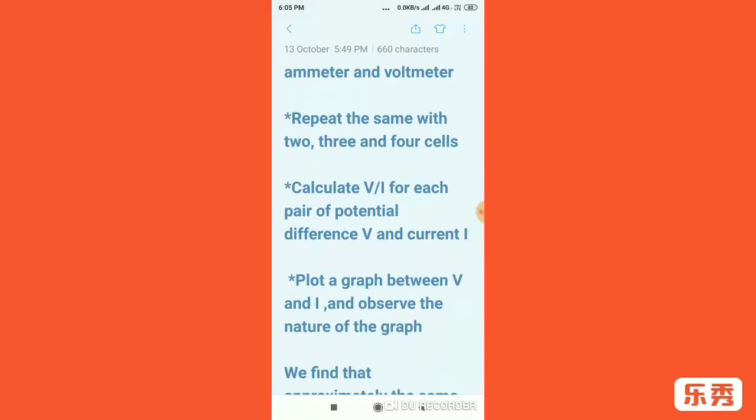Now calculate V by I for each pair of potential difference V and current I. For each pair, the first cell you got a potential difference V and I. For the two cells you got something, and now divide these and calculate the V by I ratio and record it.